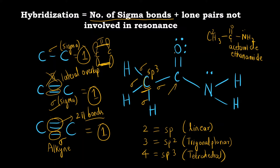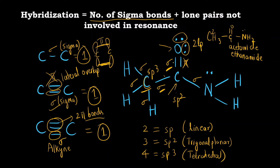For the carbonyl carbon, there are one, two, and three sigma bonds (the double bond contributes only one sigma; the other bond is pi, which we don't count). So three sigma bonds means sp2 hybridization. For the oxygen, there is one sigma bond and two lone pairs: one plus two equals three, so the hybridization of oxygen is sp2.